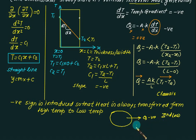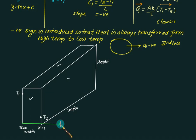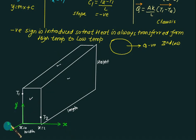Now we will try to understand the concept of what one-dimensional means. Pure one-dimensional heat transfer is not possible — we have to assume it as one-dimensional. In a figure with length, height, and width, we set up an axis system assuming heat is transferred along the x-axis. When we say it is one-dimensional, we mean there is negligible heat transfer in the other directions.